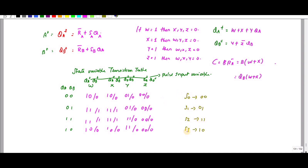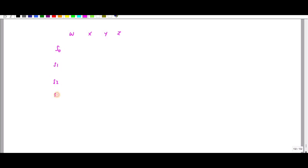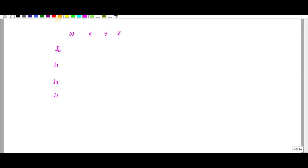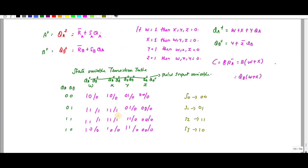Now substitute S0, S1, S2, S3 into the table. The inputs W, X, Y, Z give states: S3 S3 S1 S0 for the first group, S2 S2 S1 S0 for the next, S2 S2 S2 S0 for the next, and S3 S3 S2 S0. The output is 0 for most values.